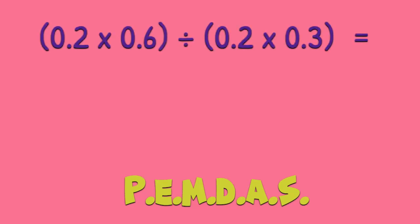So let's apply PEMDAS to this equation. We start with P for parenthesis and we underline those. 2 tenths times 6 tenths and 2 tenths times 3 tenths.